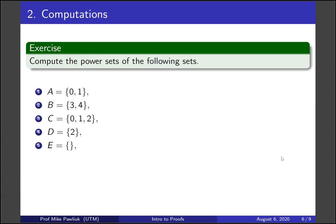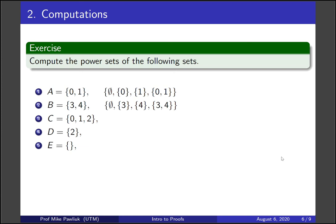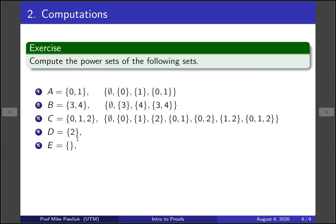Let's do some more examples. As an exercise, compute the power sets of the following five sets. Pause the video and take a moment to do this now. The first one has four elements: the empty set, the singleton {0}, the singleton {1}, and the set {0, 1}. B is very similar: the empty set, the set containing 3, the set containing 4, and the set {3, 4}. For C, we've already basically done this — it will also have eight elements. For the set {2}, there are only two subsets: the empty set and {2} itself, so two choices. And for the empty set, the only subset is the empty set itself, so the power set contains just one element.